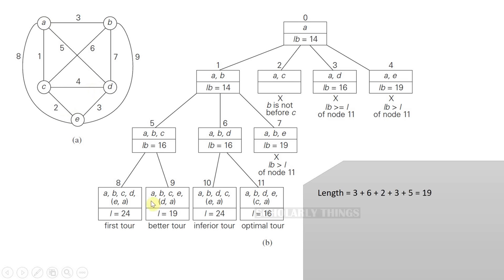At node 9, the option is A, B, C, E, D, and then A. The length will be 3, 6, 2, 3, and then 5. Totally, the length will be 19. We need to also consider nodes 10 and 11.